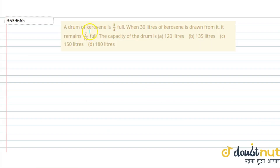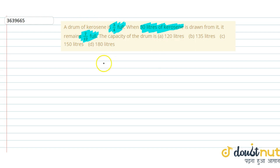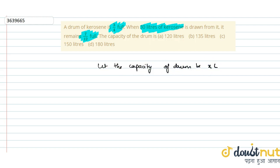The question given is: a drum of kerosene is 3/4 full. When 30 liters of kerosene is drawn from it, it remains 7/12 full. Find the capacity of the drum.